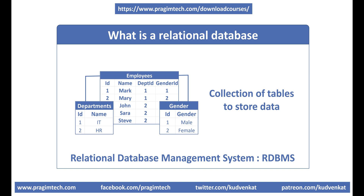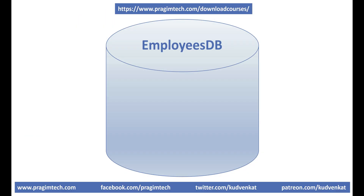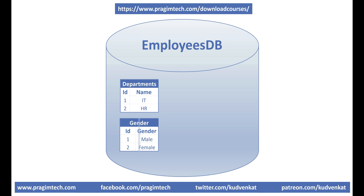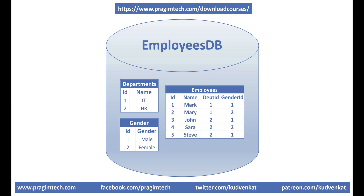For example, let's say we want to store our organization's employee data. We create a database — maybe EmployeesDB or any meaningful name we want — and then in this database we create three tables: departments to store the list of all departments, gender to store different genders like male and female, and finally employees to store the list of all employees.